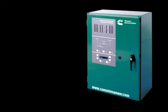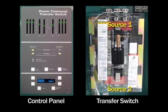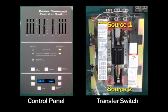The automatic transfer switch has a digital control which monitors the condition of both power sources. If the control senses instability or a loss of power, it will transfer the load to the alternate power source. When conditions return to normal, it will transfer back to the preferred source automatically.